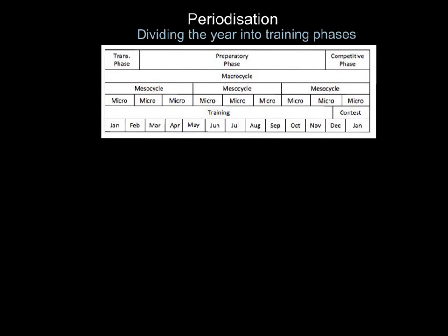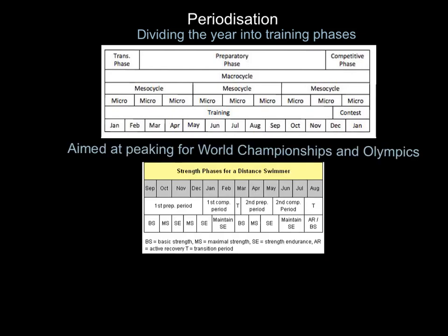It's about planning week by week, month by month, what you are actually aiming for. I've copied a diagram here which gives a lot of the terminology we need. For example, looking at the competitive phase in December and January, it raises the question of which sport this applies to. The key point is: who are the people who are going to periodize a training program? It's those that need to peak for major events - aimed at peaking at world championships and Olympics.